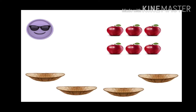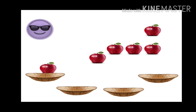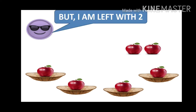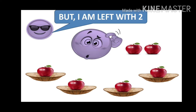Now it's the turn of roll number 4. He has got 4 baskets, so he starts filling up one by one. Now there are only 2 apples left but there are 4 baskets. They cannot be filled up because the number of apples is less but the number of baskets is more. So he is left with 2 more apples — he cannot finish this activity.